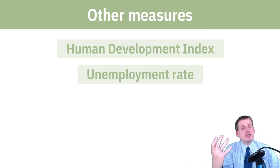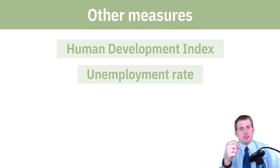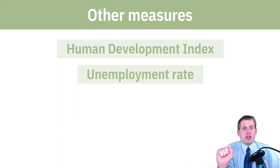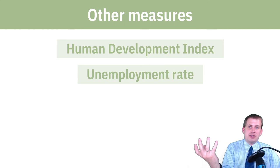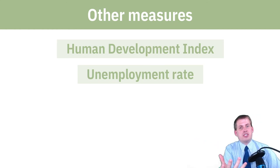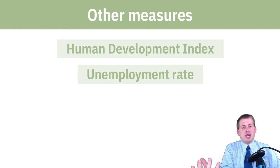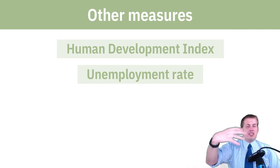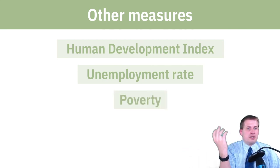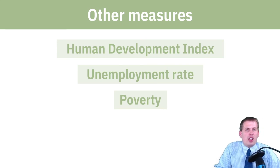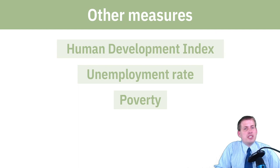The unemployment rate isn't always super accurate. If someone has been unemployed for a year, they may drop out of some unemployment measures. If they're no longer actively seeking a job, they're no longer counted. And if you had a full-time job with a 401k in 2008, lost it, and have been doing gig work ever since — underemployed — you're going to be under-accounted for in that measure.